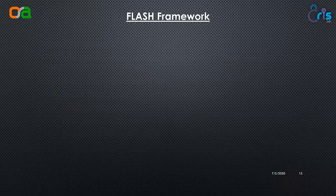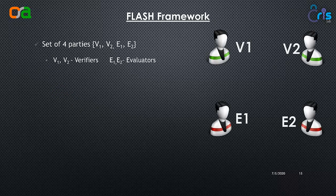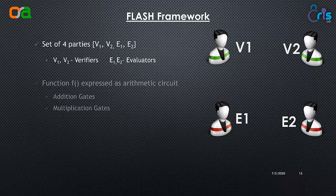Let's come to our FLASH framework. As I said, there are four parties, which we call V1, V2, E1, and E2. V1 and V2 act as our verifiers, and E1 and E2 act as our evaluators. The function f that they want to compute is expressed as an arithmetic circuit, which is basically a composition of addition and multiplication gates.